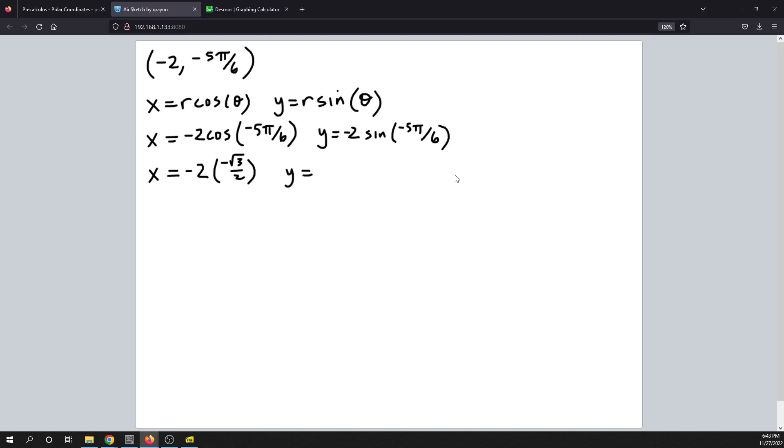And the value for sine of negative 5 pi over 6 is negative 1 half. All right, and so just simplify that as much as possible.